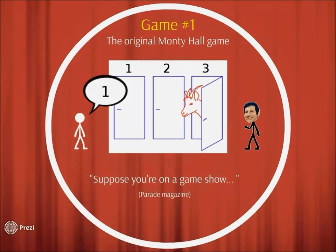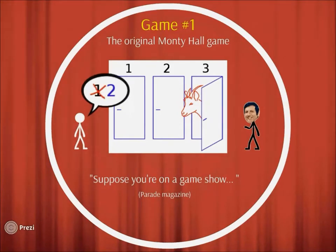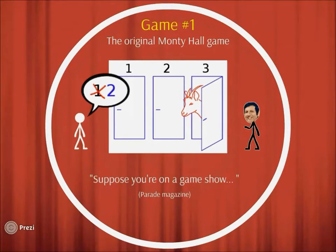Since you saw the explanation of the Monty Hall problem on number five, you already know that you should always switch to have a two-thirds chance of winning the car. Interestingly, a variation of this problem is surprisingly analogous to Bell's inequality, the famous test of quantum mechanics.